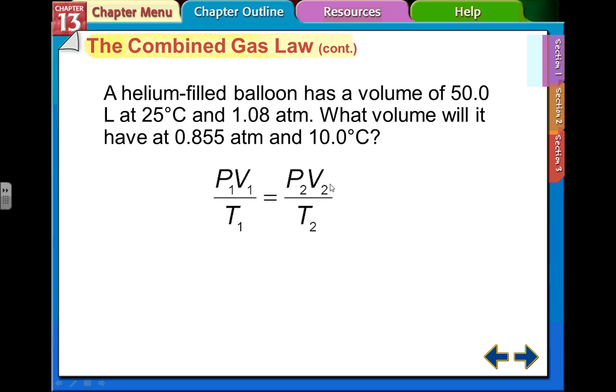Here's the equation, the combined gas law equation again. So the 50, that's the V1. The 25, that's the T1, but we got to change that to Kelvin. So that's going to be 298 Kelvin. And the 1.08 atmospheres are P1. So all those first three go in this equation part here. And the other two go P2 is here at 0.855. And the Celsius temperature, T2, we change that to Kelvin. So that's going to be 283.